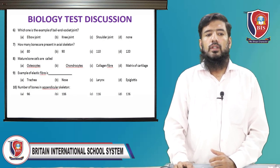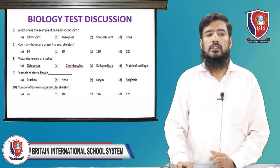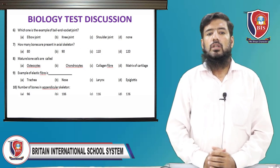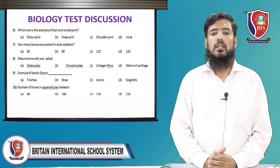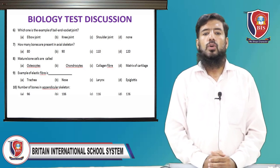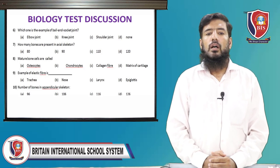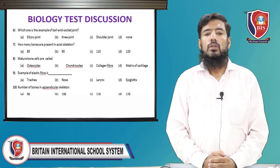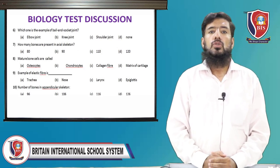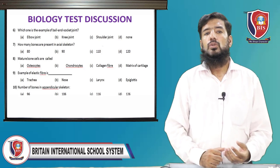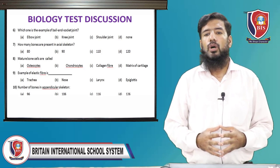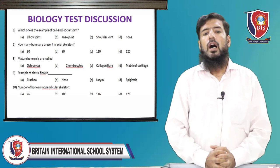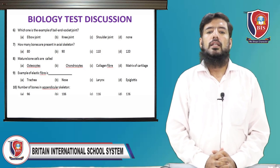MCQ 6: which one is the example of a ball and socket joint? The options are elbow joint, knee joint, shoulder joint, and none of these. The correct answer is shoulder joint — it is the example of a ball and socket joint.